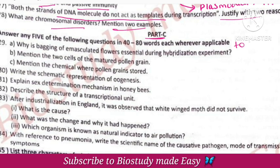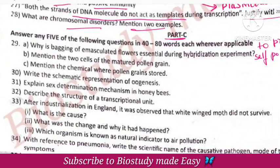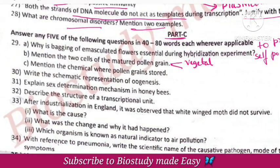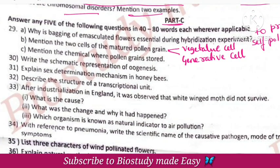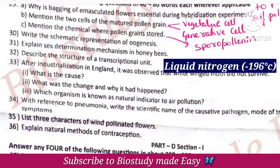Part C: What is bagging? Why is bagging of emasculated flowers essential? — To prevent self-pollination. Two cells of matured pollen grains: the vegetative cell and the generative cell. Pollen grains are stored in liquid nitrogen at minus 196 degrees Celsius.